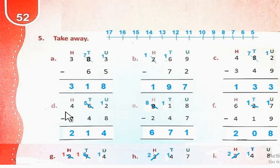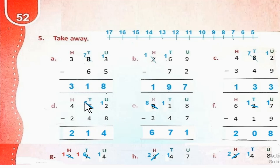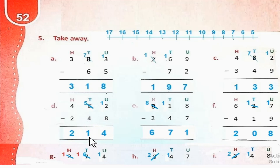Part D: 462 minus 248. 2 से 8 को minus नहीं किया जा सकता। So हम 1 ten borrow करेंगे — 6 से 5 रह जाएगा, और यह 12 हो जाएगा। 12 minus 8 = 4. 5 minus 4 = 1. 4 minus 2 = 2. So the answer is 214.